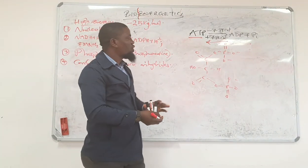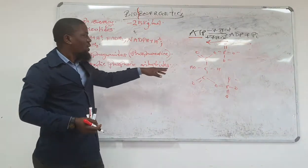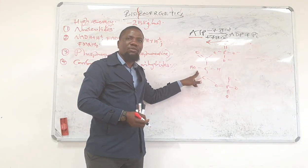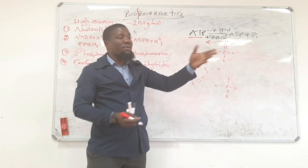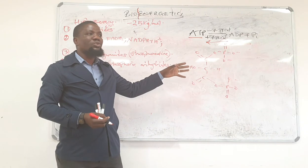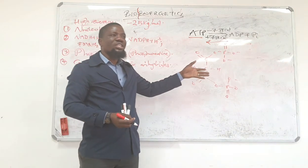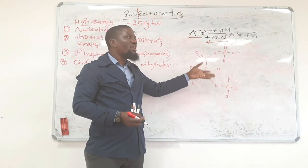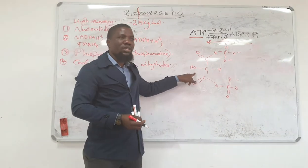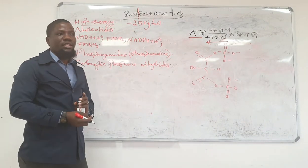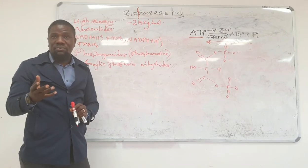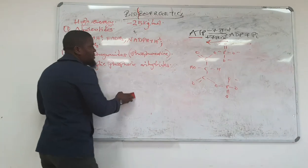Other molecules could be 2,3-bisphosphoglycerate — the same one which you met in hemoglobin, the one that was leading to inhibition of oxygen-carrying capacity, the Bohr effect and things like that. In hemoglobin, 2,3-bisphosphoglycerate is also a high energy molecule. Not familiar, right? We'll explain why.